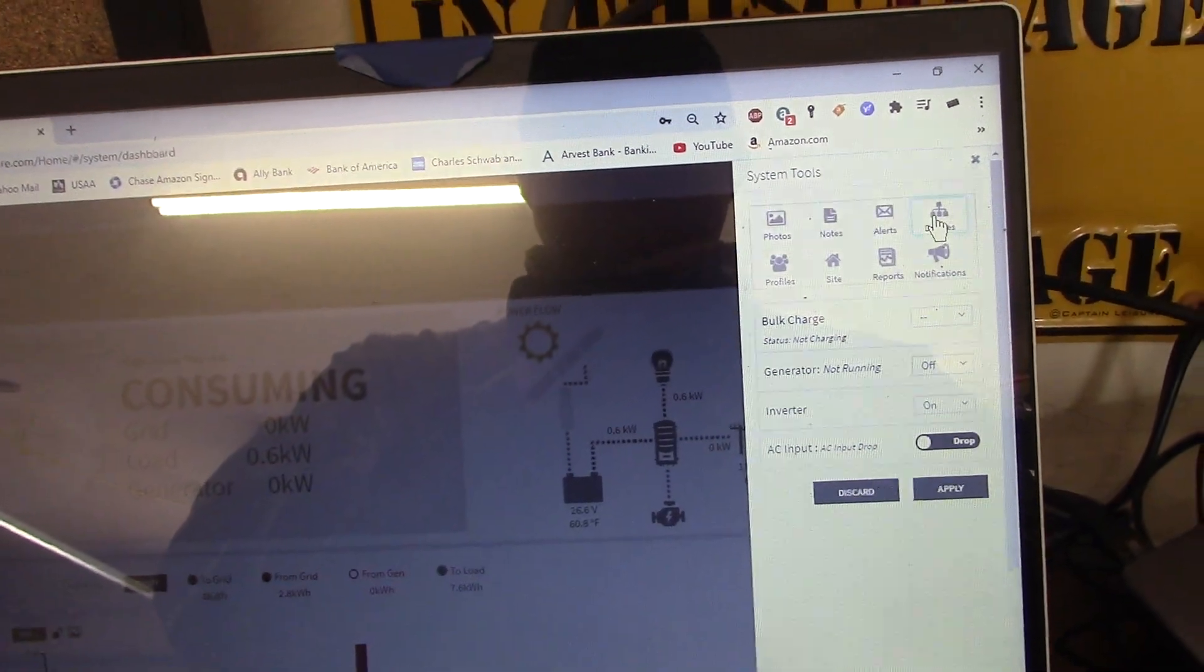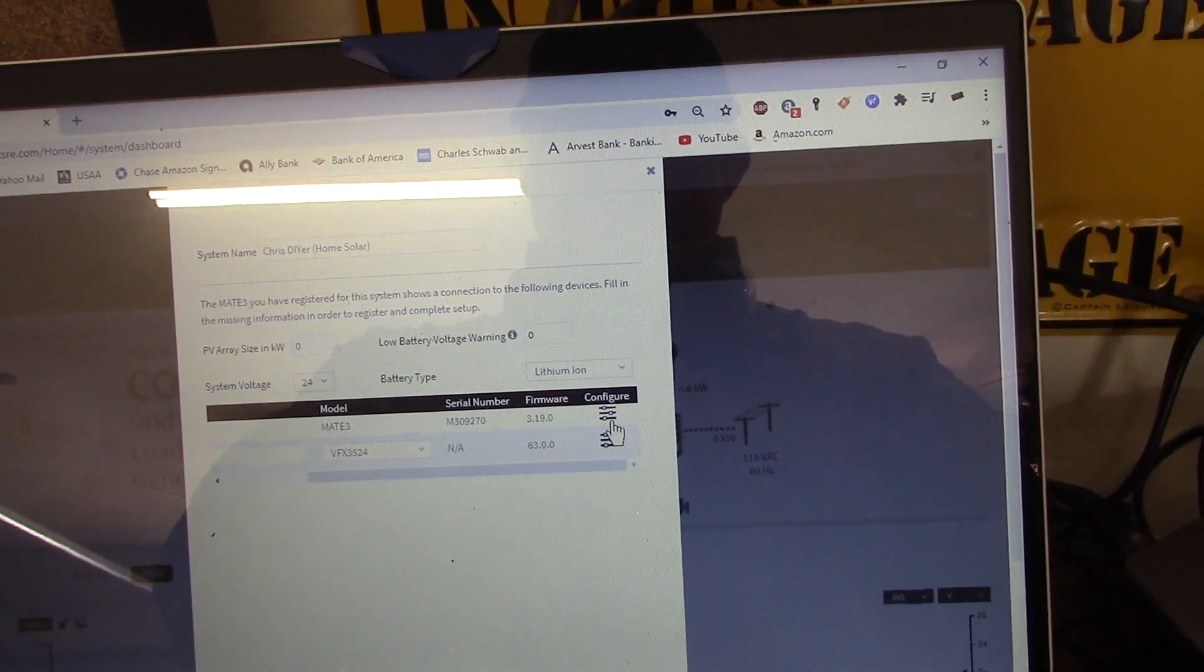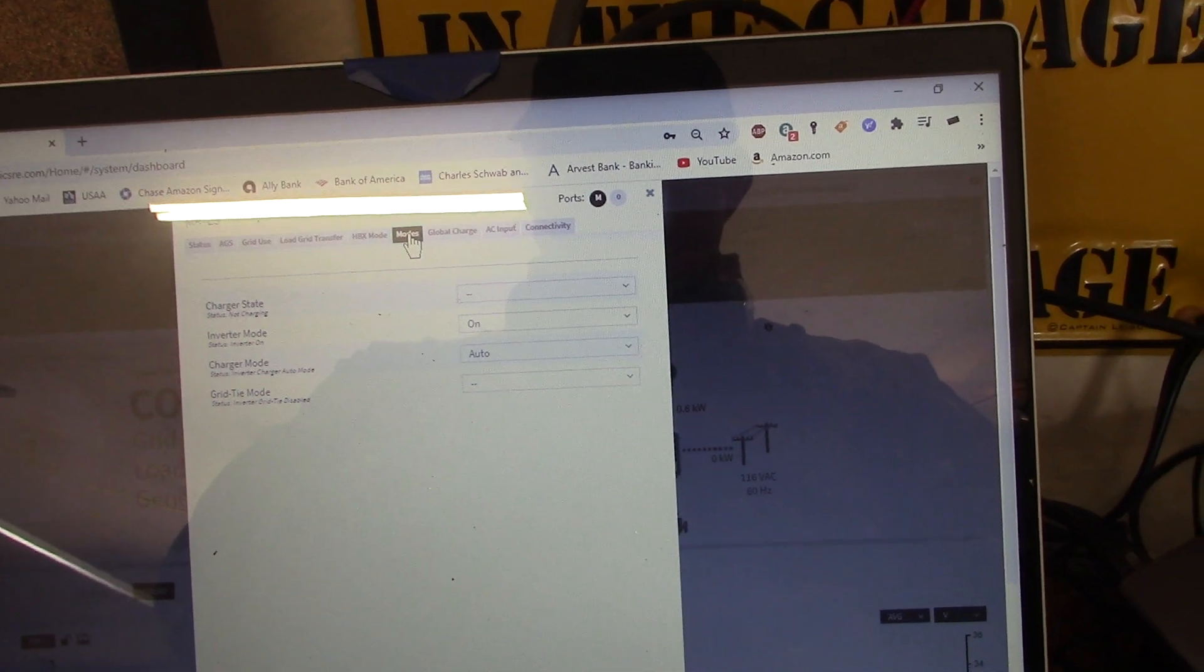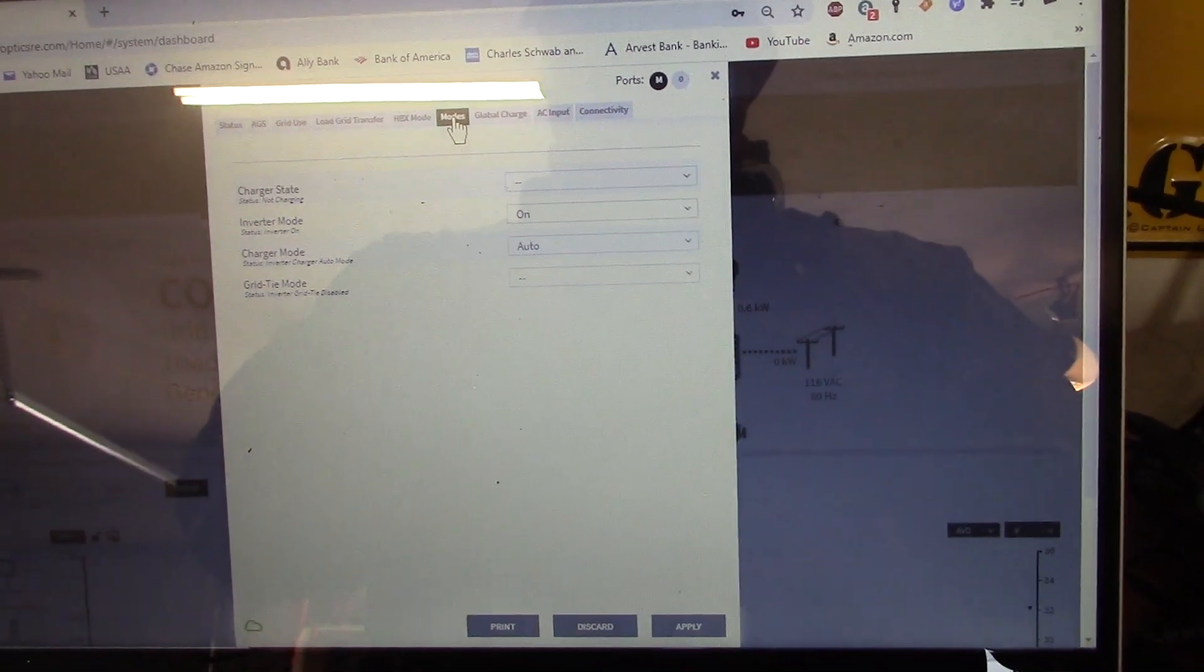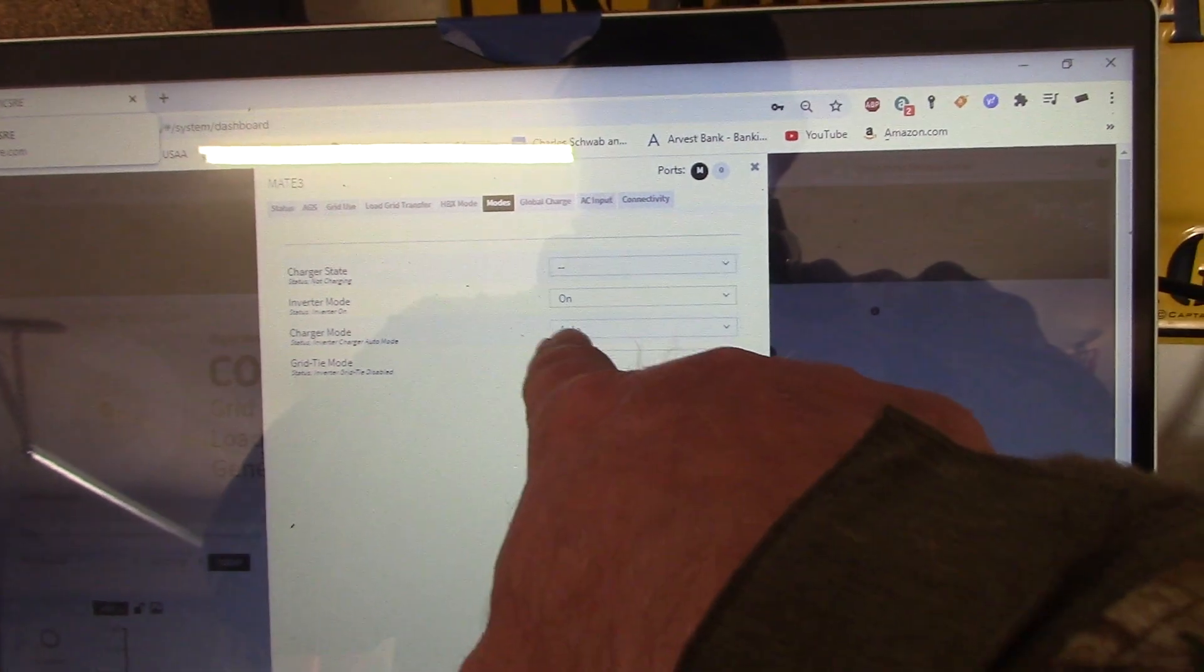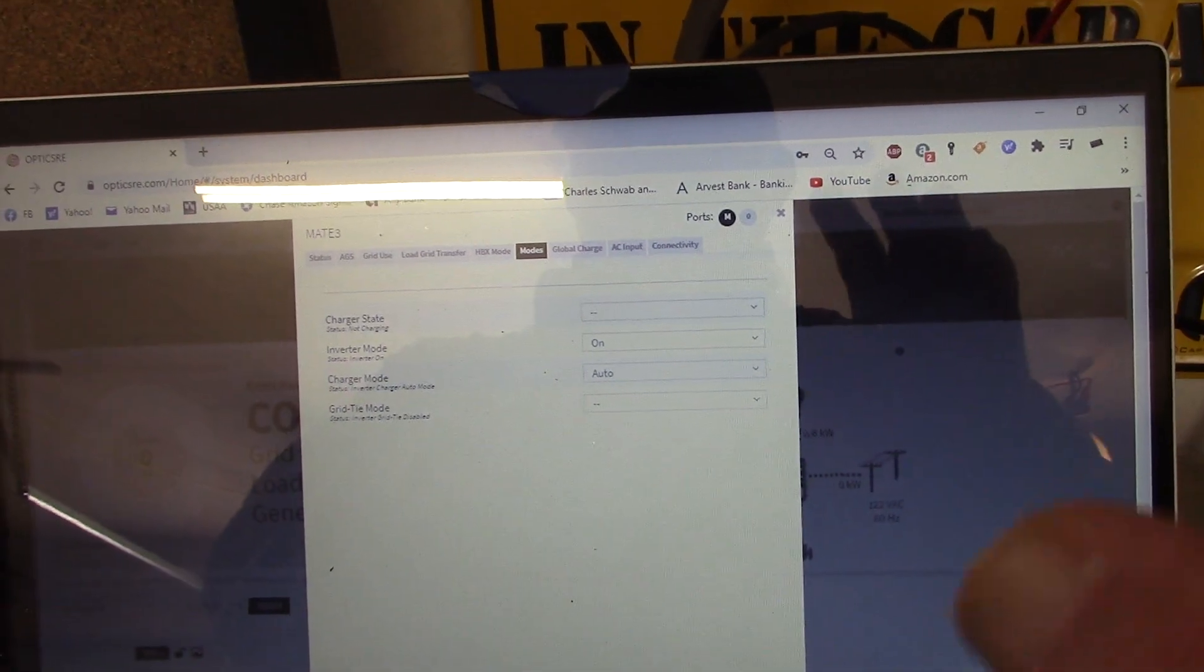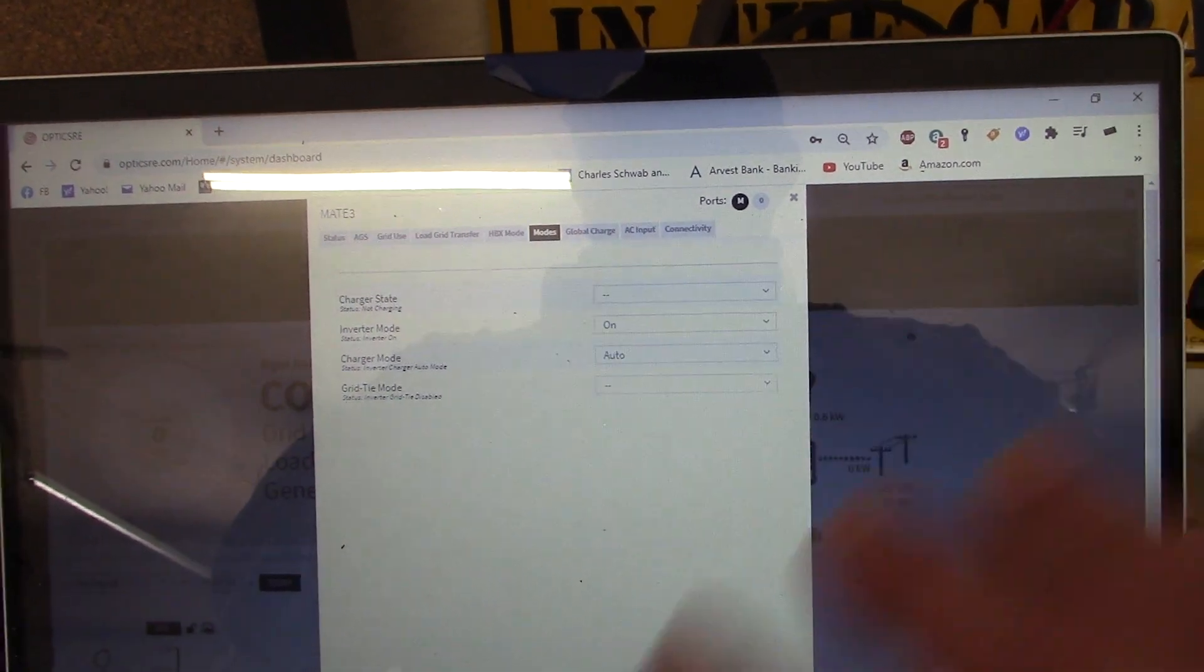If you go to devices, you got to go into Mate 3 here to configure your mode. I don't know if you can see that or not. But right down here this had no default on here at all. Charger mode was blank. And it's got to be in auto mode. So both the inverter and the Mate 3 have got to talk to each other.